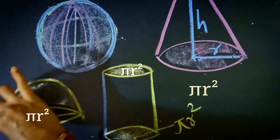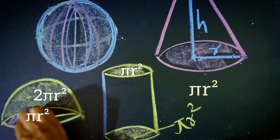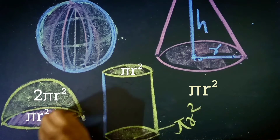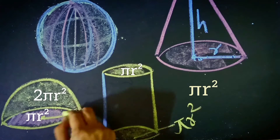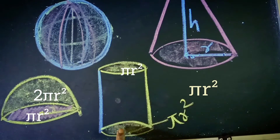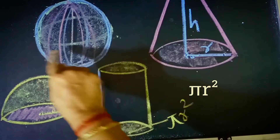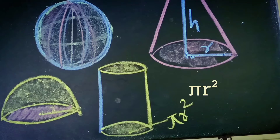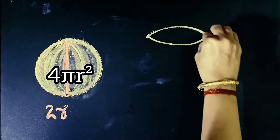If we exclude the circular bases it will be the curved surface area. A hemisphere has a flat circular base; its area is pi r squared. The curved surface area of a hemisphere is two times pi r squared. Including the circular base gives the total surface area. A sphere, however, does not have any circular base, so its curved surface area and total surface area are the same — four times pi r squared.